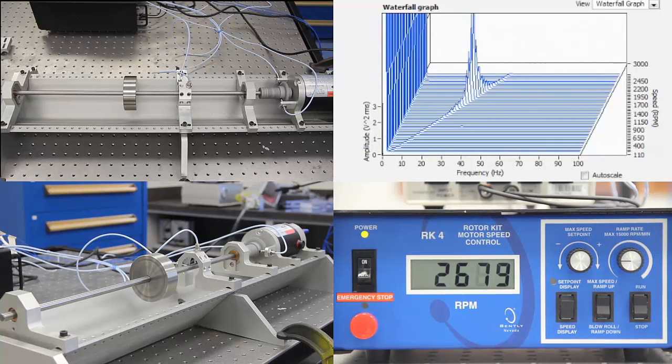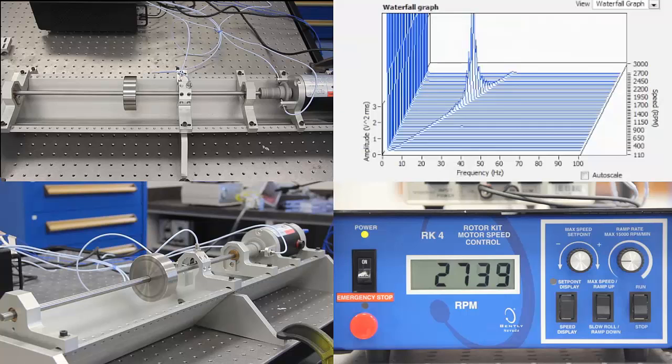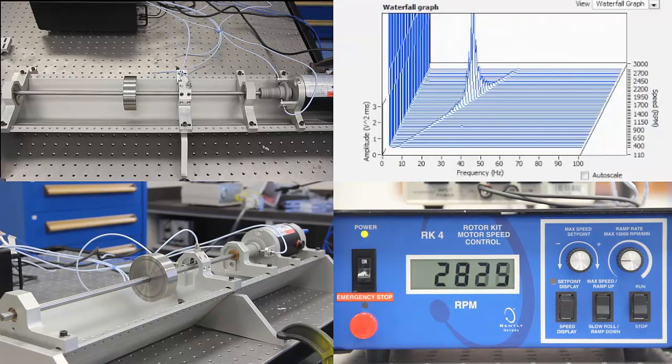If such a situation cannot be avoided, we may choose appropriate bearings or we may design a vibration controller which will suppress the amplitude of vibration whenever the rotating machinery crosses the critical speed.